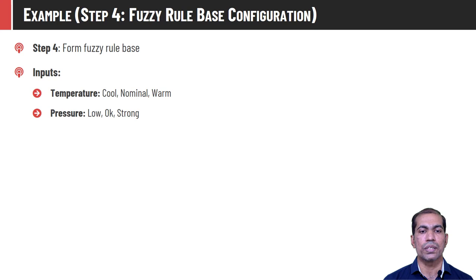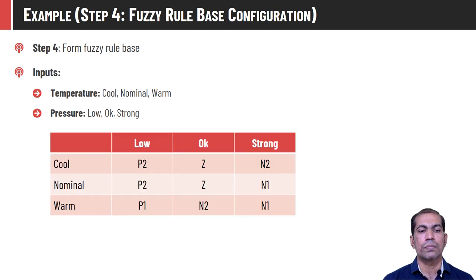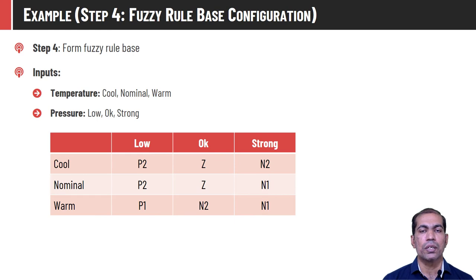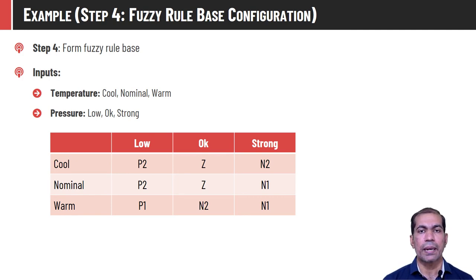The next step is to design a rule base. We have three possibilities for input temperature and three for input pressure, giving a total of nine rules combining temperature and pressure. Filling this rule base requires help from a domain expert. According to their experience and observations, the output values — ranging from N2, N1, Z, P1 to P2 — are assigned. If these values are not set properly, the system may not be accurate, which is why the domain expert's role is critical.